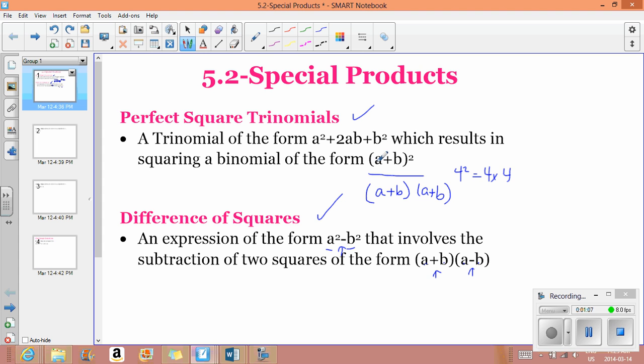You would do the square of this and the square of this to get these two terms. To get the middle term, you would do the first term times the second term and then times it by 2 to get the middle term.